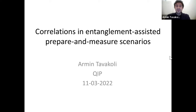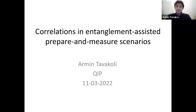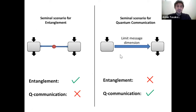In this work, we are interested in examining a very basic resource in quantum information processing, namely the conjunction of entanglement and quantum communications. Both of these resources are very well known, have been studied for a long time and are paradigmatic for quantum information processing. Typically, we have studied them very well, but separately.